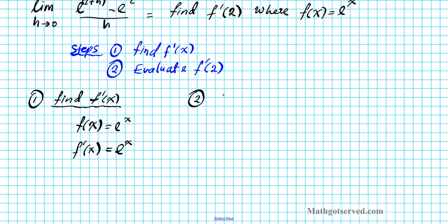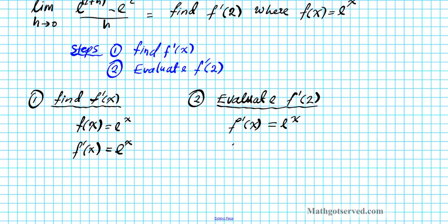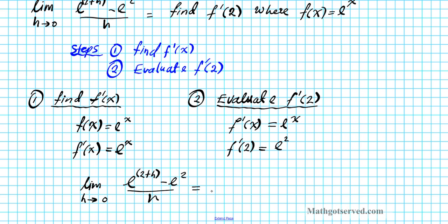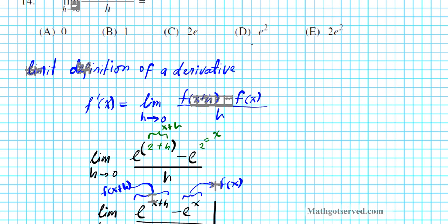Now for step 2, we evaluate the derivative f prime at x equals 2. We know the derivative is e to the x, so we substitute 2 for x. The derivative evaluated at x equals 2 gives us e squared as our final answer. So the limit as h approaches zero of e to the two plus h minus e to the second power over h equals f prime of 2, which equals e squared. Our answer is option letter D.